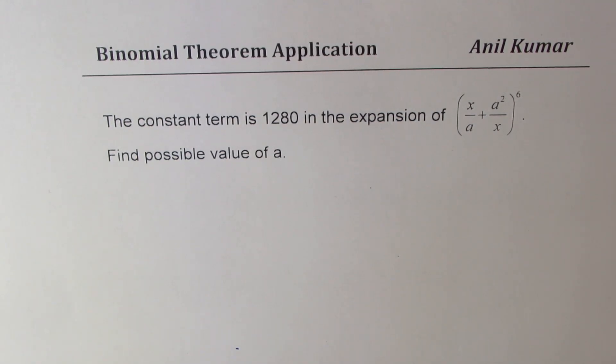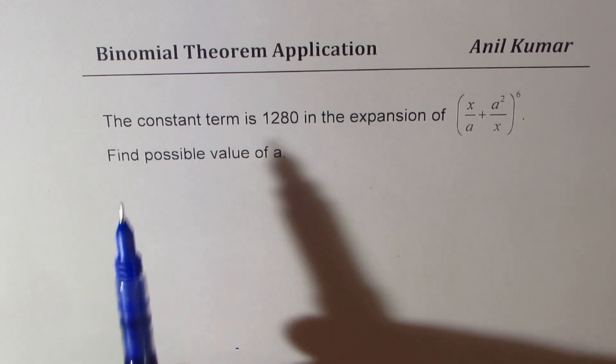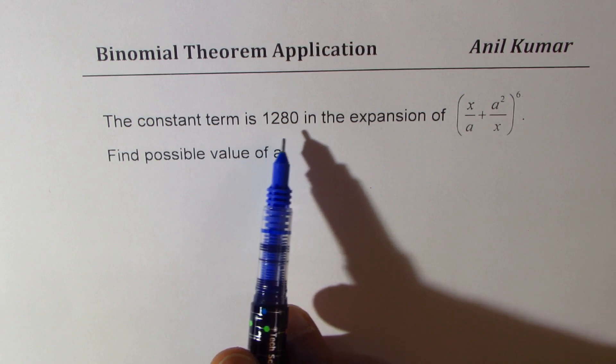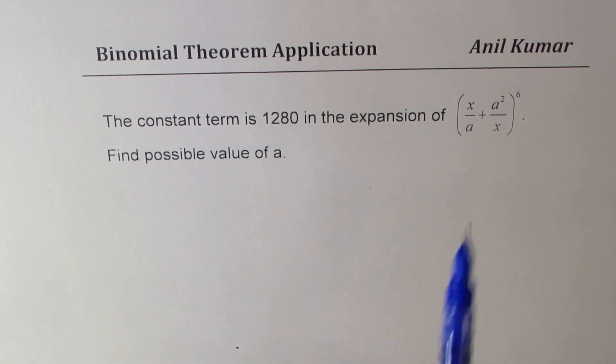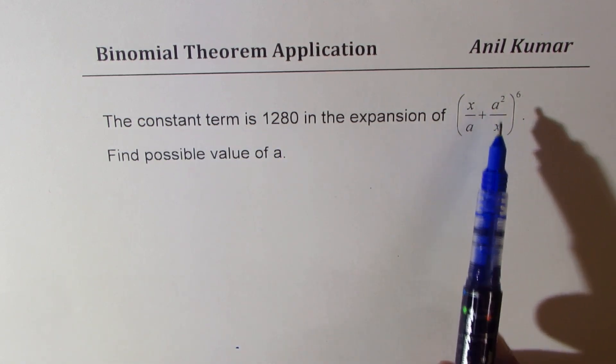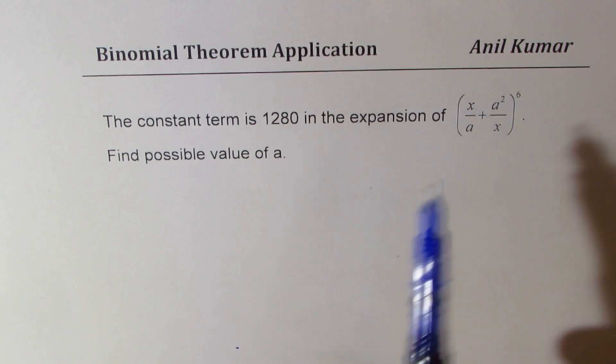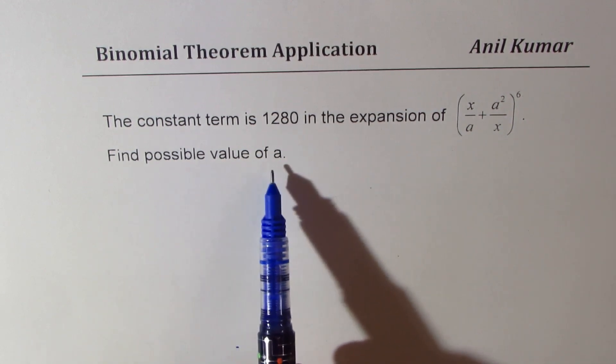I'm Anil Kumar sharing with you a very important question based on binomial theorem application. The constant term is 1280 in the expansion of (x/a + a²/x)^6. Find possible value of a.